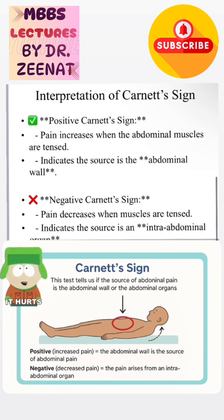This is how we determine whether the pain is from the abdominal wall or abdominal organs. When the patient raises their head from the bed and pain increases, it means the pain is from the abdominal wall. If the pain decreases on raising the head, this is a negative Carnett Sign, and the pain is actually from the abdominal viscera.